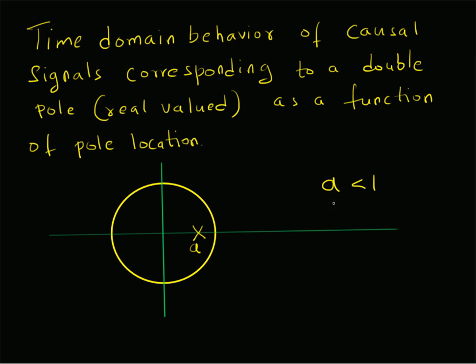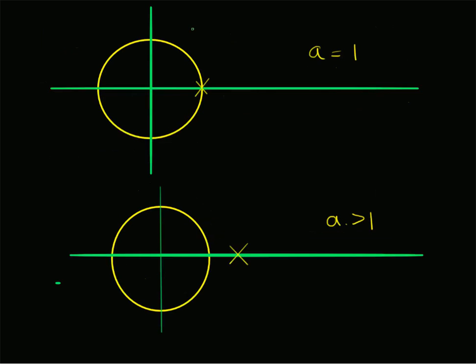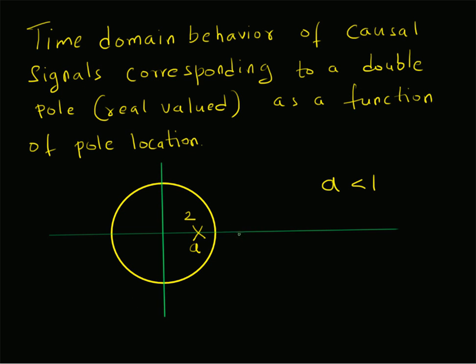We are talking about double poles, meaning each case has two poles. For a < 1, we have two poles at z = a. For a = 1, two poles at z = 1. And for a > 1, two poles at z = a where a is greater than one. The question is: what is the corresponding time domain behavior of the signals for each of these three cases?